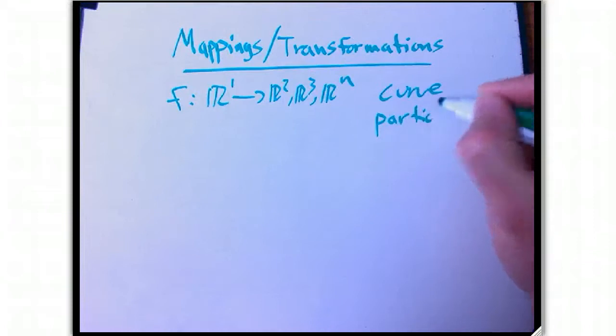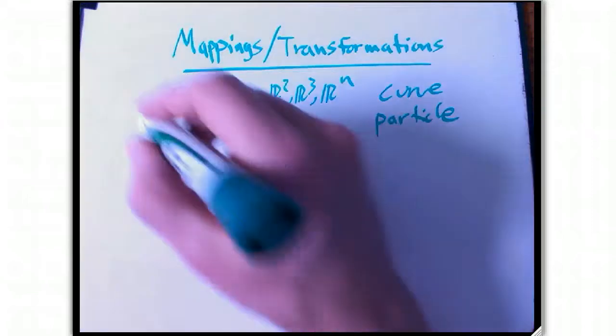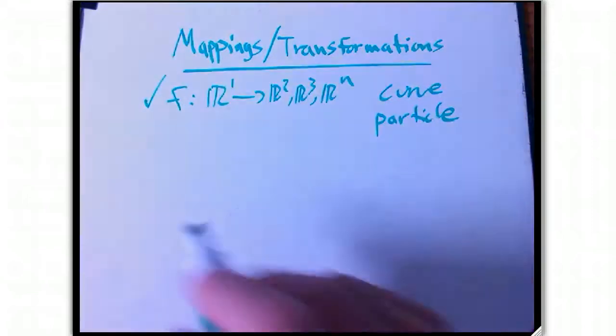A good physical model is the motion of a particle. We've got velocity and curvature and all kinds of interesting geometry there. So that's kind of done, although there's lots more we could say.